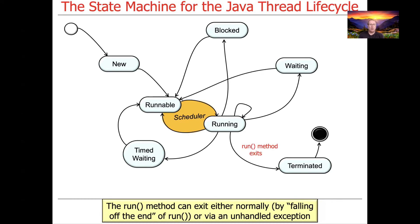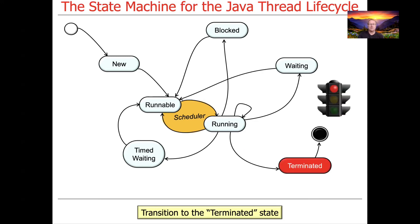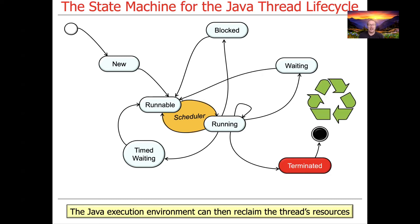At some point, we're going to terminate the thread. There are a couple different ways to do this: one is to fall off the end of run in a normal way, and the other is if an exception is not handled, in which case we also fall off the run hook method, although it'll be a bit more abrupt and less graceful. At that point, at long last, we have reached the terminated state. Once we're in the terminated state, the Java execution environment can reclaim the thread's resources and put those resources back to be reused by other threads or other parts of the program.